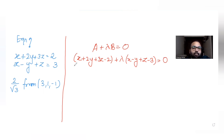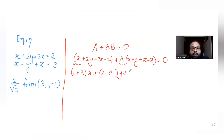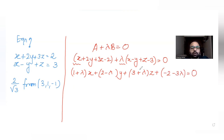Taking x as common: (1 + λ)x + (2 - λ)y + (3 + λ)z + (-2 - 3λ) = 0. This is the required equation of the plane in terms of λ.